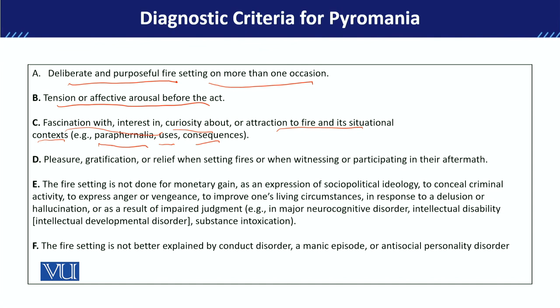D jo hai woh hai: pleasure, gratification, or relief when setting fire, or when witnessing or participating in their aftermath. Jis tarha inhone yeh criteria diya hai ke fire setting se pehle in andar tension feel hoti hai, ya in ke andar kisi kisam ka affective arousal aata hai, yani kisi kisam ka mood change hai, aur jab woh fire set kar lete hai, to D criteria mein they are explaining ke they feel pleasure and gratification or relief — tension se relief jo hai woh unko feel hoti hai. Aur especially woh pleasure feel karte hai jab woh consequences dekh lete hai, ya usse observe karte hai, ya uske baad participate bhi karte hai — jaise waha se logon ko hatana — in ko pleasure milta hai.